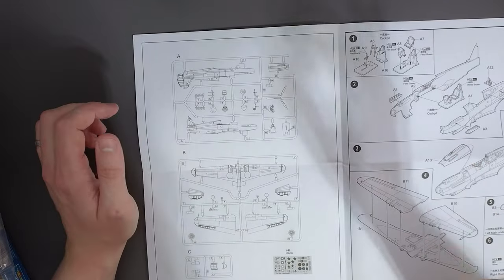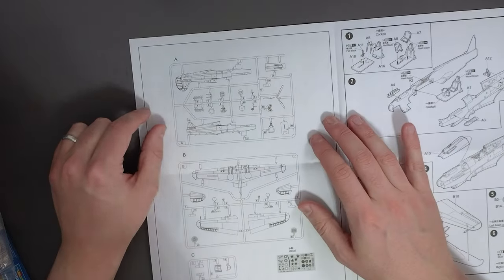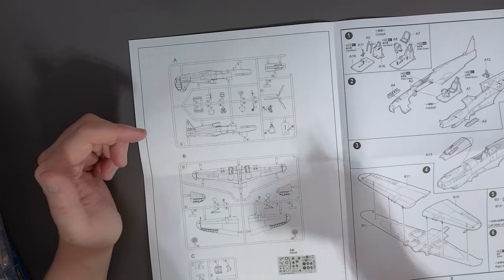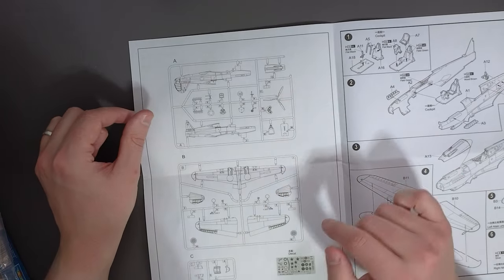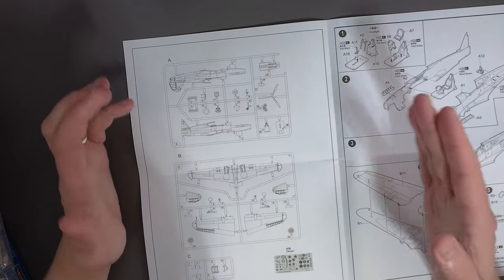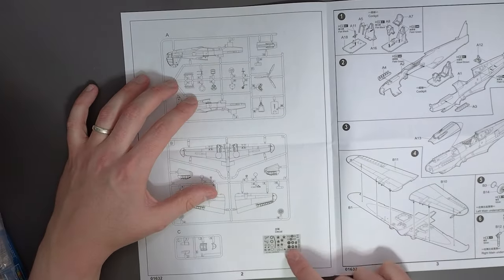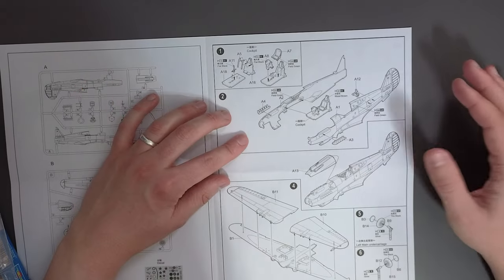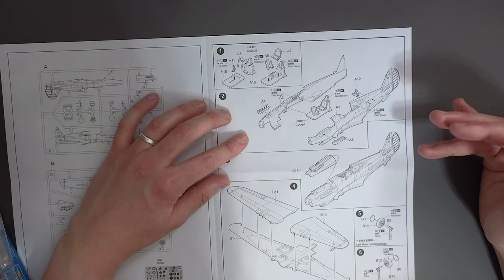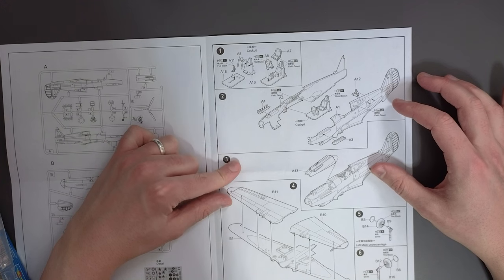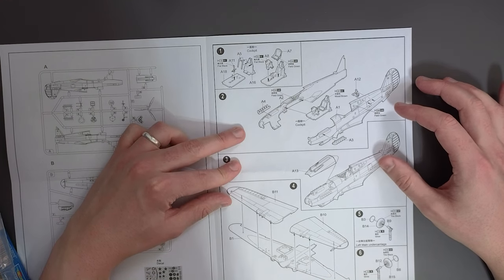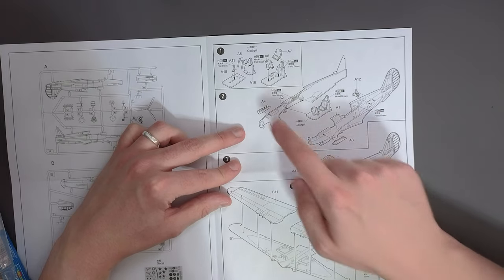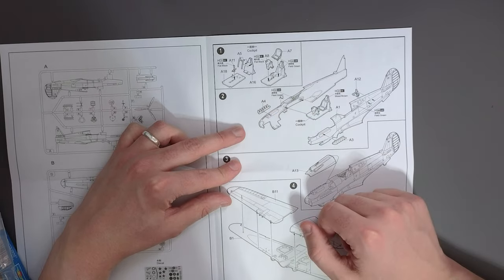We do have a sprue map. A sprue map is always great to have. Not only can we cross-reference it to make sure we've got all our parts but also it helps us to identify which parts we need and where they are. We also have a decal sheet included. Move on to the assembly instructions and we have black and white images, exploded diagrams which seem to be relatively easy to follow.